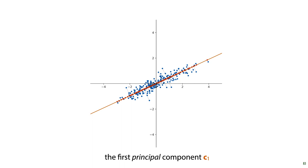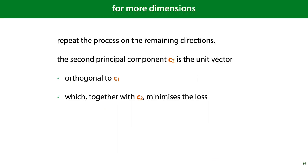If we want to reduce our data to more than a single dimension, we can repeat the process. We keep the first principal component fixed. And the second principal component is then the one orthogonal to the first that minimizes the reconstruction loss given the two reduced dimensions. Each next principal component is the direction orthogonal to all the previous ones that minimizes the loss when the data is reconstructed using all of them.